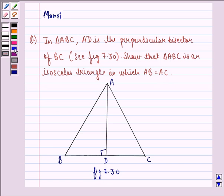In the question it is given to us that AD is the perpendicular bisector of BC. That means AD stands perpendicular on BC and it divides BC into two equal halves, that is BD is equal to DC.